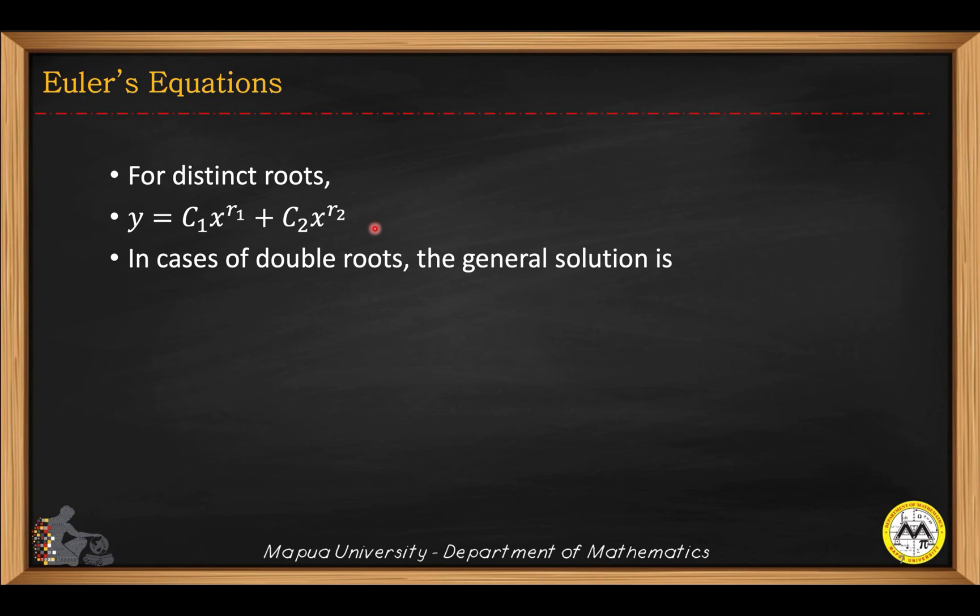In cases of double roots, the general solution will be the following. For identical roots r, the second term will now contain the logarithmic function, ln of x.